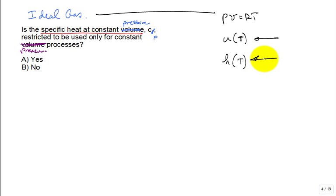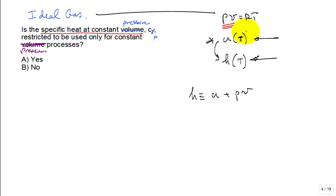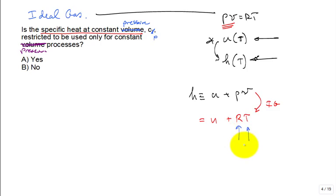What about enthalpy H? H is also a function of temperature only for an ideal gas. If you believe U is a function of temperature only, it's easy to get here because H is defined as U plus PV regardless of the substance. For an ideal gas, PV can be replaced by RT. R is the ideal gas constant — it's a constant. T is only a function of temperature. So this is a function of temperature plus another function of temperature, giving H as a function of temperature only.